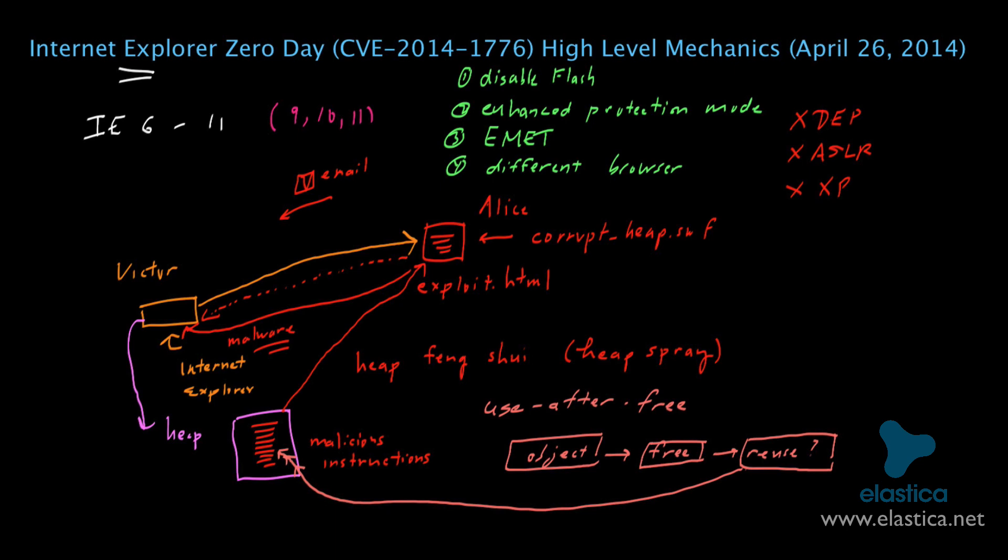So for more details, you can see Microsoft's Security Advisory. The number is 296-3983. You can also search under the Common Vulnerabilities and Exposures Database, or CVE. Just search for the CVE number 2014-1776.